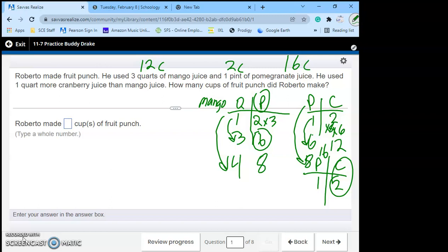So now we have to add up the total cups. We had twelve, two, and sixteen. Two and two is four plus six is ten. One and one is thirty cups of fruit punch.